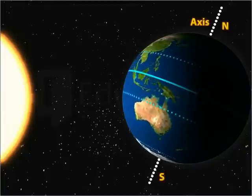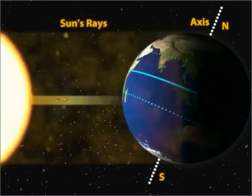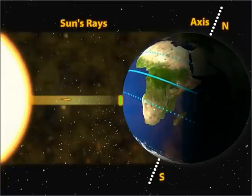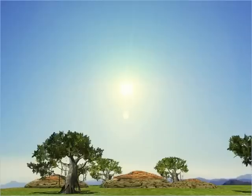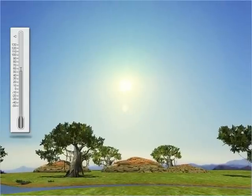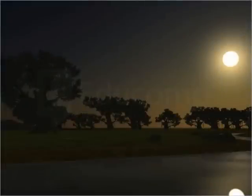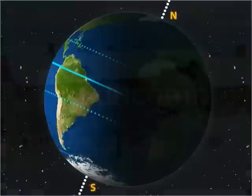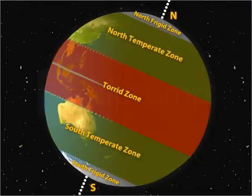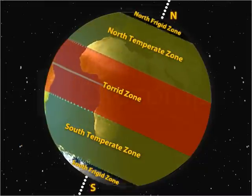The same is happening when the rays of the sun fall directly on those parts that are vertically below the sun. The rays heat only a smaller area on the Earth, and thus the heat energy received by that area is also very high. Based on the difference in heat energy received at different places, the surface of the Earth is divided into different heat zones, namely the torrid zone, the temperate zone, and the frigid zone.